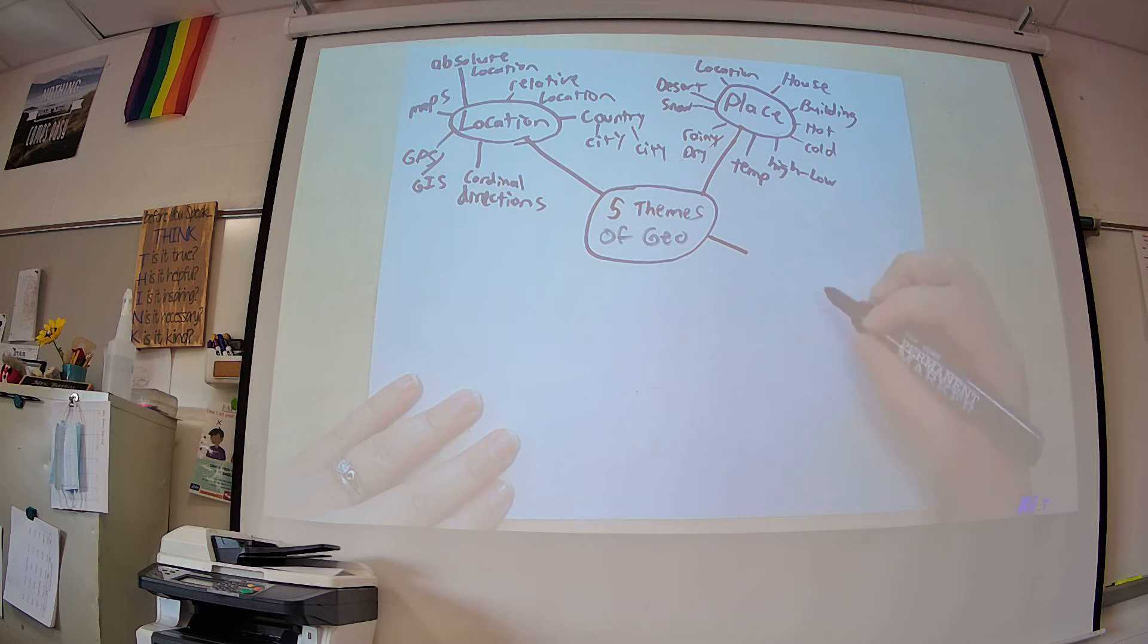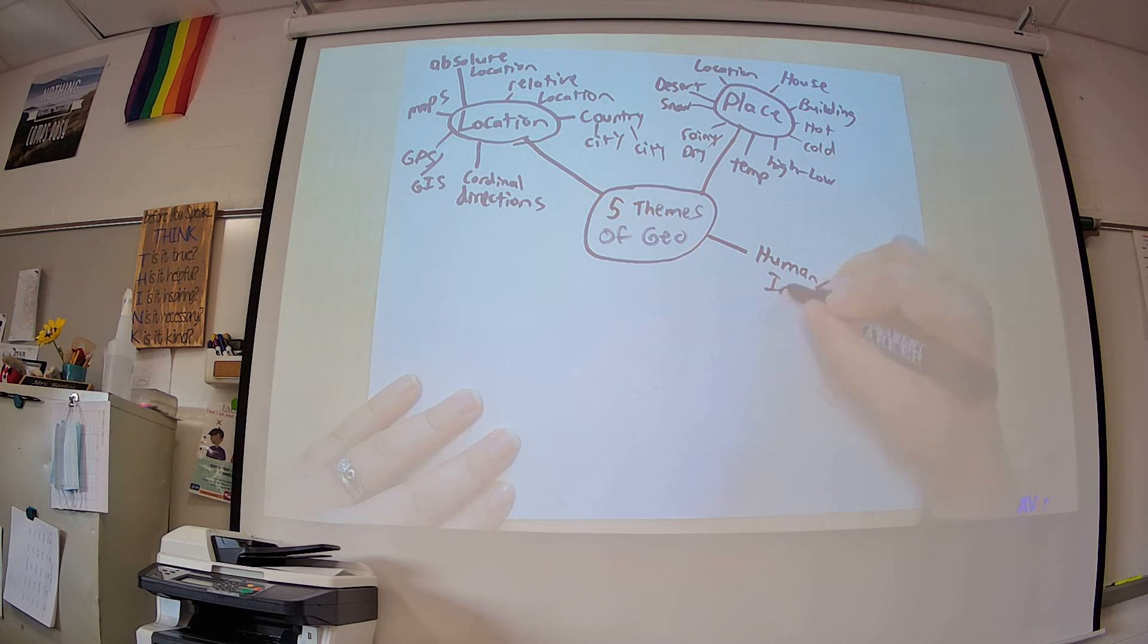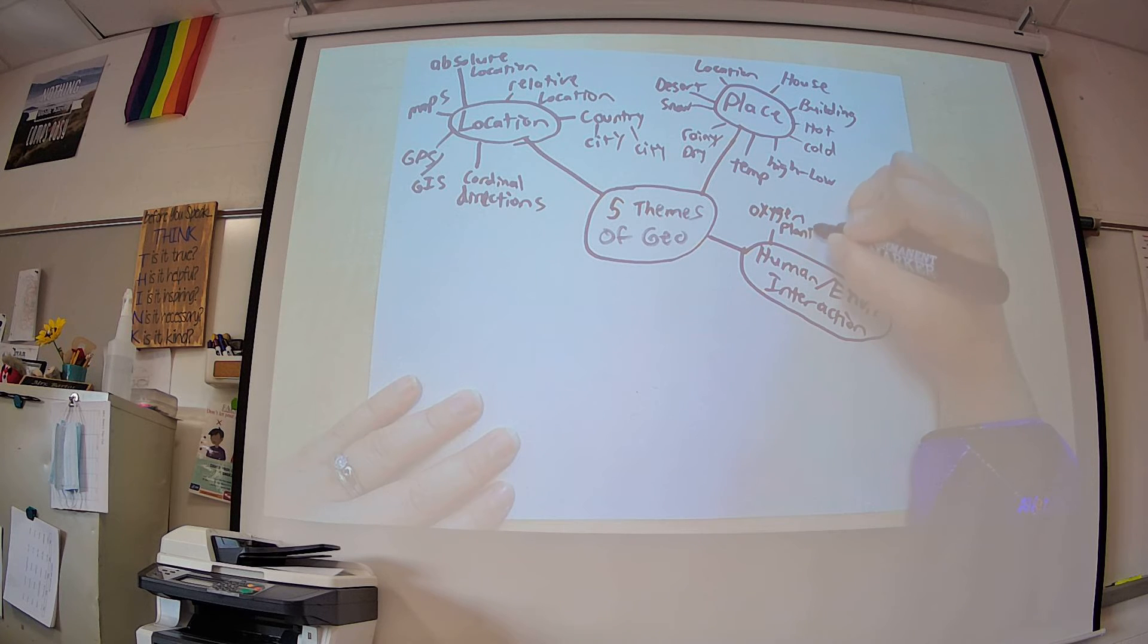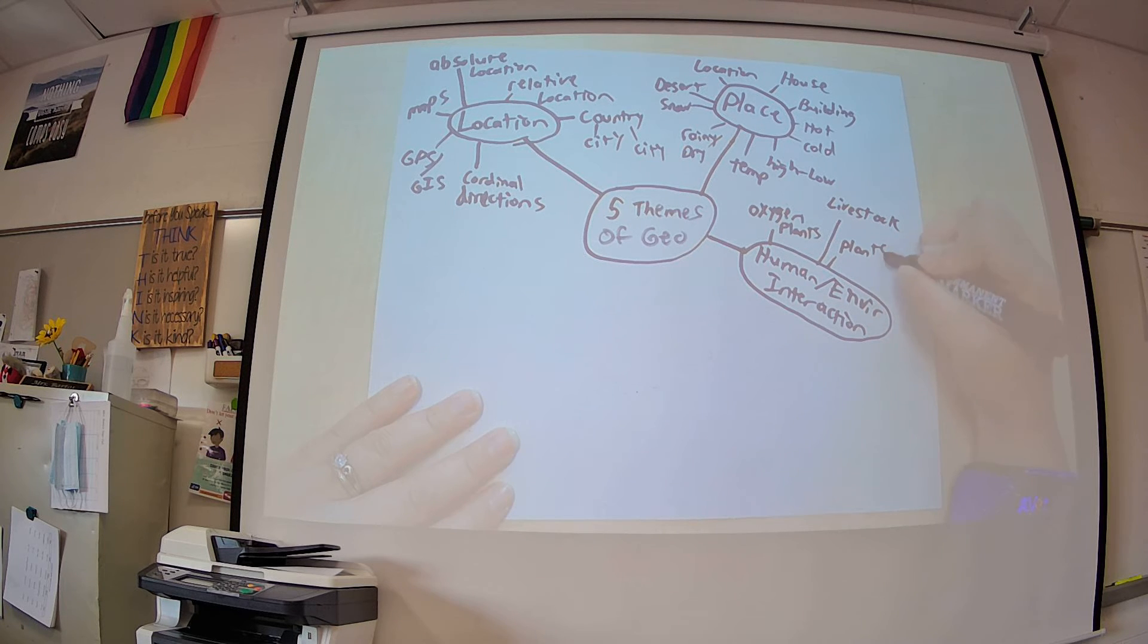If we take a look at human environment interaction. How are we interacting with our environment? Think about it. We do benefit from our environment, so we do get oxygen from plants. We do have livestock, horses, pigs, that we eat. Of course, plants that we also eat. We grow. Water, we do depend on water very much.